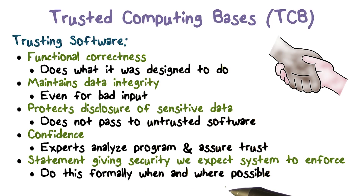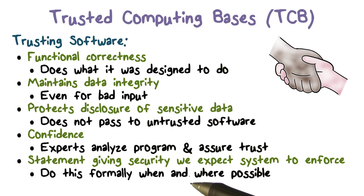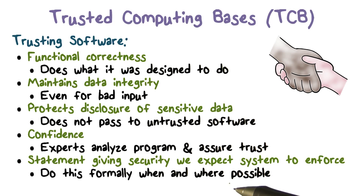The best possible scenario is that all this could be done formally — we actually have a proof that whoever is providing the trusted computing base meets our requirements. When we have a formal proof of it, that would be ideal. But would it be possible always? This is one of the questions we're going to explore as we go through this lesson.